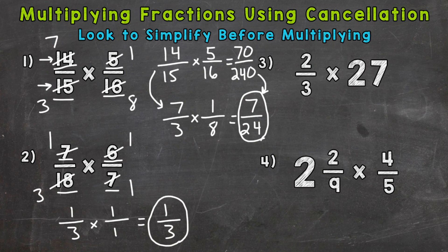Now again, you can do 7 18ths times 6 sevenths and keep it as is. And you will get the same answer. It's just going to take more simplifying at the end there. And you do have larger numbers in value to work with. 7 times 6 and 18 times 7. So on to number 3 where we have 2 thirds times 27. So a fraction times a whole number.